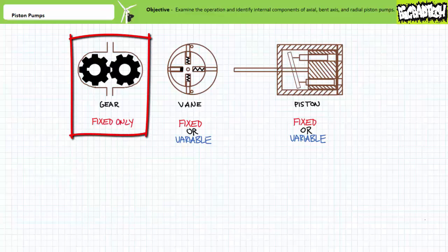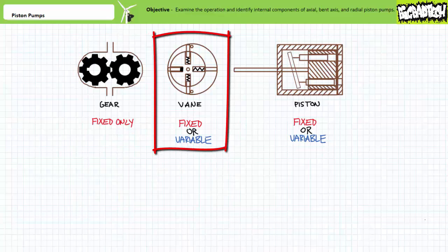Gear pumps use a pair of equally sized meshing gears to provide pressurized flow to a hydraulic system. All gear pumps are fixed displacement pumps. Vane pumps can either be fixed or variable displacement pumps depending upon construction. A vane pump uses a slotted rotor and extendable vanes that scrape the inside of a cam ring.